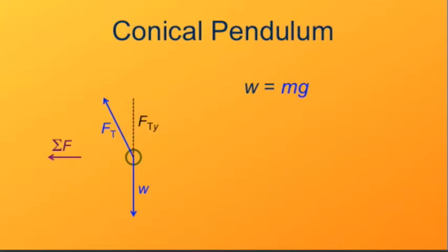Thus when we break the tension into its vertical and horizontal components, the vertical component has to exactly cancel the weight so it has magnitude the same as the magnitude of the weight, or mg.